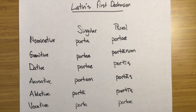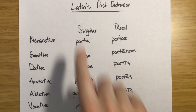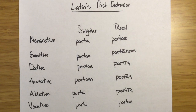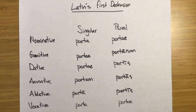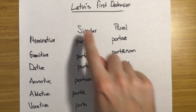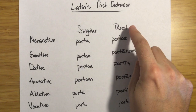Hello and welcome to Aurelian University. In this video I want to talk really quickly about Latin's first declension. In Latin we have five declension patterns — five ways that noun forms change depending on their case and their number, depending on whether they're singular or plural.